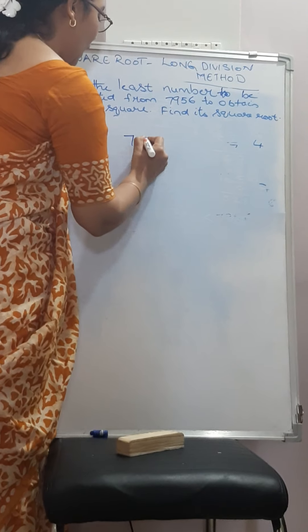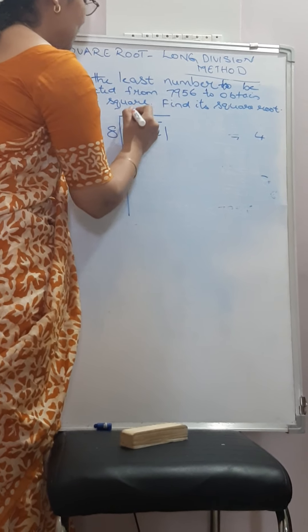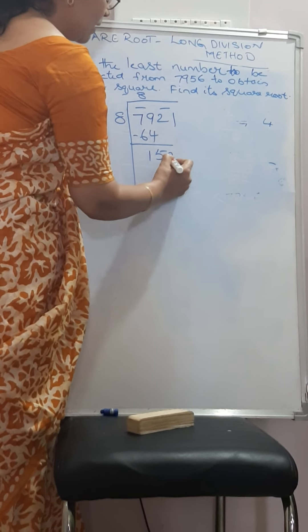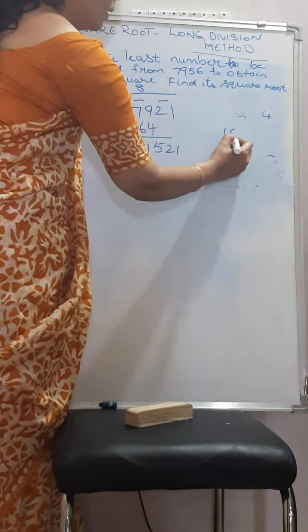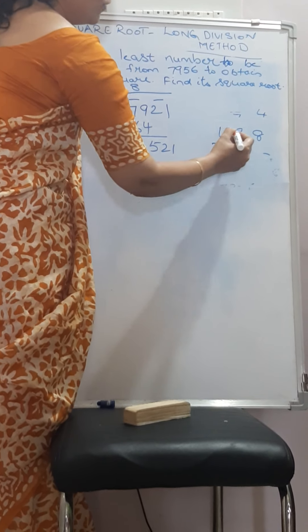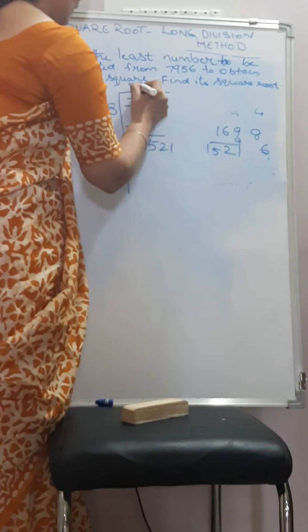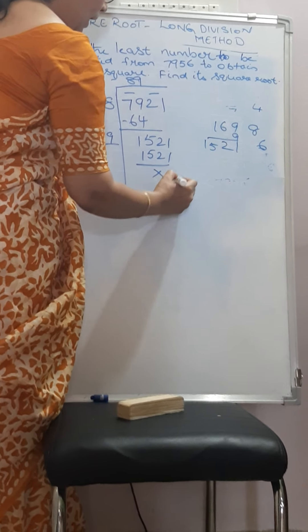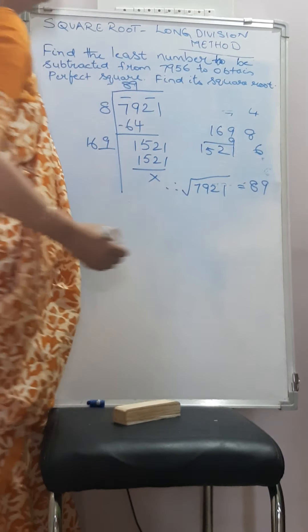Now let us find out the square root of this perfect square number, 7921, again by long division method. 8 times 8 is 64, 9 minus 4 is 5, 7 minus 6 is 1, giving 1521. 8 doubled, just as we have seen, 169 times 9: 9 times 9 is 81, 9 times 6 is 54 plus 8 equals 62, 9 times 1 is 9 plus 6 equals 15. So this time 91521. Therefore, square root of 7921 is 89.